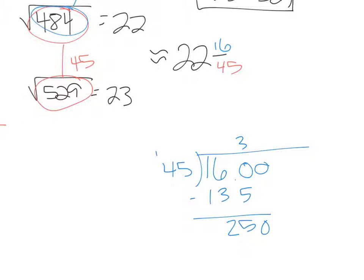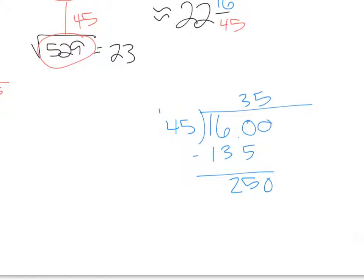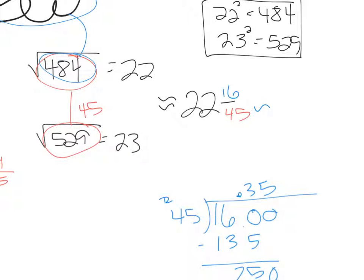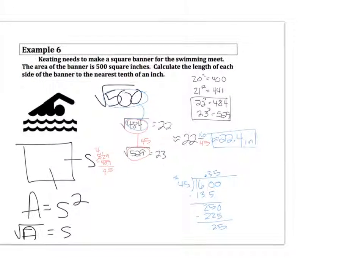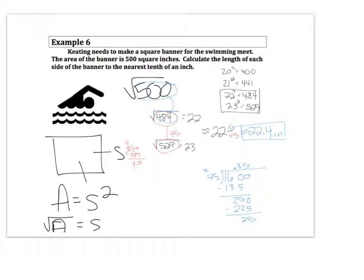Again, 45 is about 50, so I'm going to guess 5. We'll see if that works out. 5 times 5 is 25. Carry the 2. 5 times 4 plus 2 is 22. Subtract. I'm going to get 25, so that works out. So I know it's going to be about 0.35. When I round that, that gives me that this is about 22.4 inches, I believe, is our label. I'm going to check that. The area of the banner, yep. So the side would be 22.4 inches for the side.